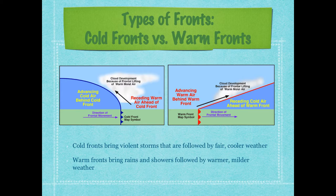Warm fronts bring rains and showers followed by warmer, milder weather. The warm front is shown by half circles in red. As the front moves through, it can bring rains and showers, but then you'll have that warm air mass over the location — whether it's Dallas or wherever you are — and that's when you'll have that warmer, milder weather after the front moves through.